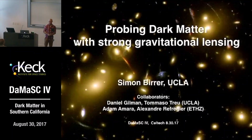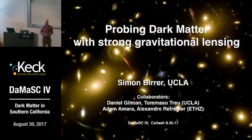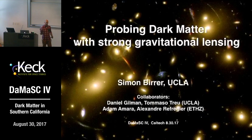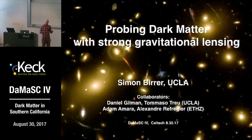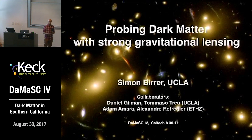It's my great pleasure to introduce and make you familiar with strong gravitational lensing as a probe of dark matter. My name is Simon Beer. I mainly work now at UCLA with Daniel Gilman as a PhD student sitting in the audience, Thomas at Troy, and last year at ETH in Zurich with Adam Amara and Alexandre Refugier. I'll give you a broader review of what is the state today on gravitational lensing and look a bit ahead at what we may expect in the next few years — it's really fast approaching.